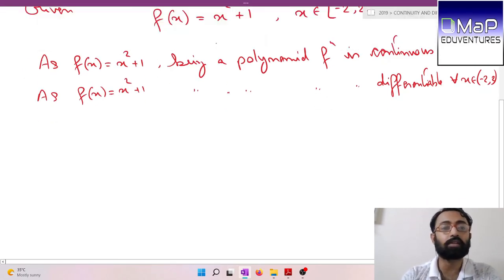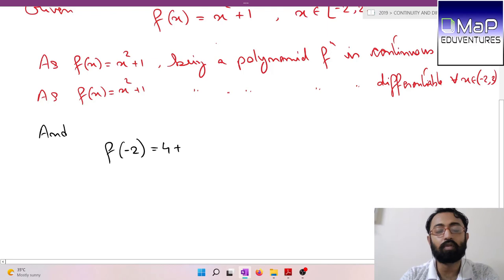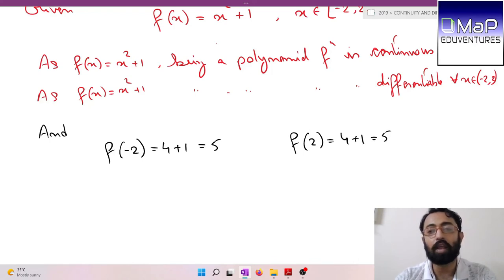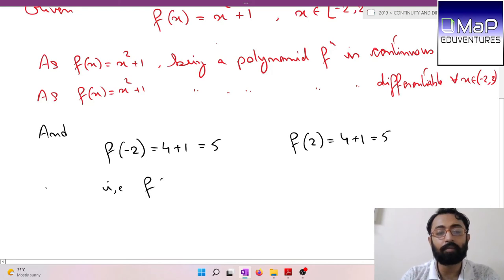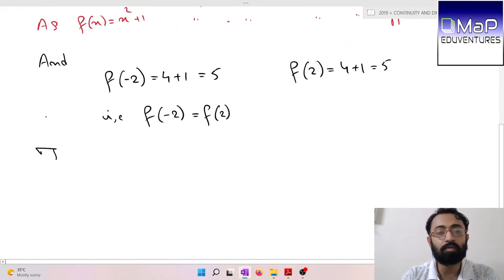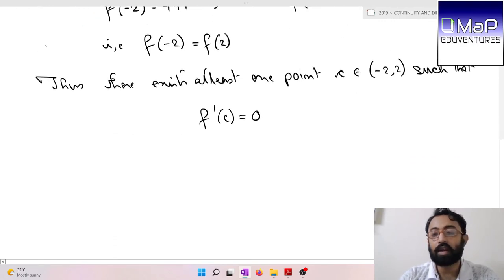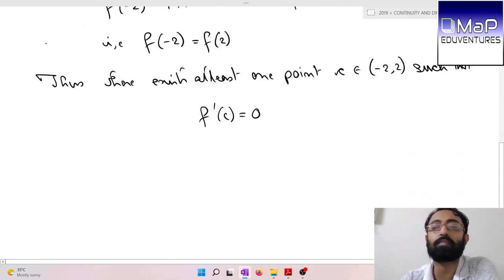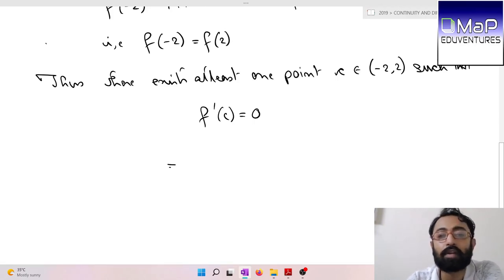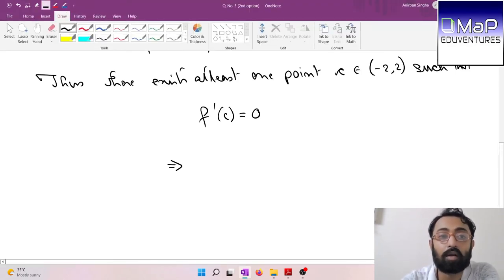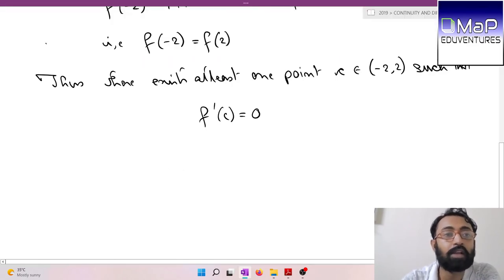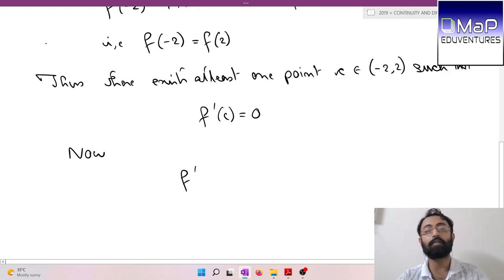Polynomial functions are continuous and differentiable. Let us check at the end points. f(-2) = 4 + 1 = 5, and f(2) = 4 + 1 = 5. At the endpoints we got equal values, that is, f(-2) equals f(2).